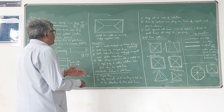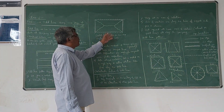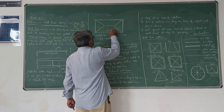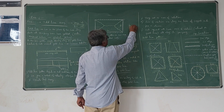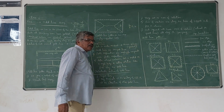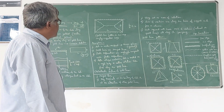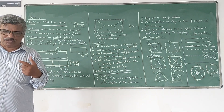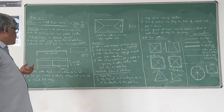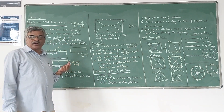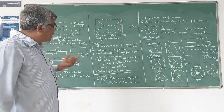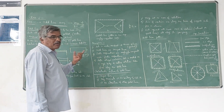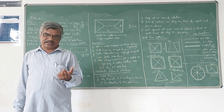This is another example of the yield line pattern in a two-way simply supported slab. A two-way slab is one where the L/B ratio is less than or equal to 2. In a one-way slab, main reinforcement is placed in the shorter direction and distribution steel in the longer direction. Whereas in a two-way slab, bending takes place in both directions, and therefore main reinforcement is provided in both directions — L and B.